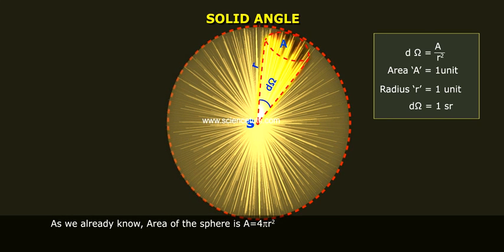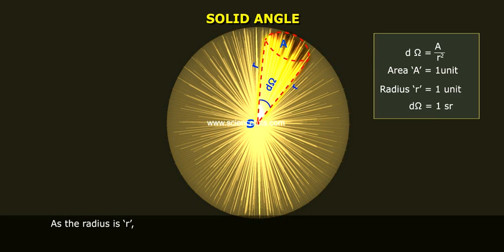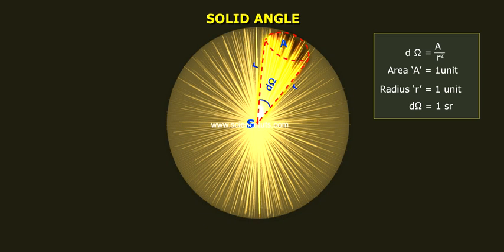Therefore, the total solid angle for the sphere as a whole is d omega equals 4 pi r square by r square. Therefore, d omega is equal to 4 pi steradians.